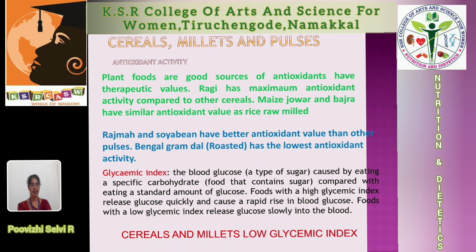The next important topic is the glycemic index. It estimates the amount of glucose or sugar converted into blood after eating — that is called the glycemic index. It is best to start with a low blood sugar level and work your way up. When the level of blood sugar changes, disorders occur in the body and body functions will be changed. Millets have a very low glycemic index energy level.